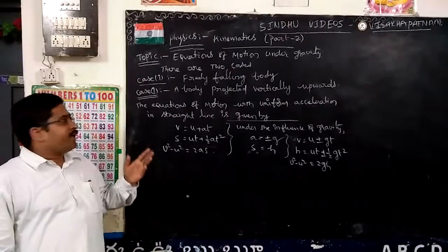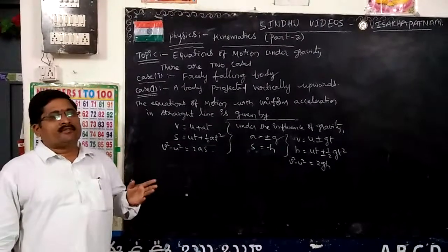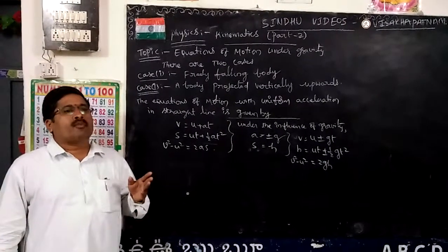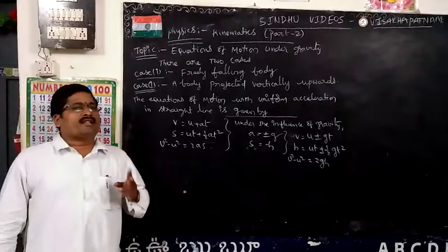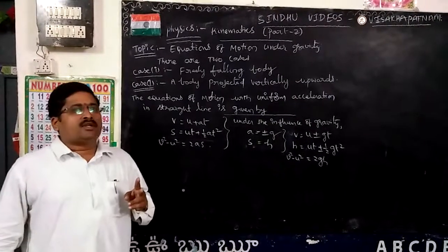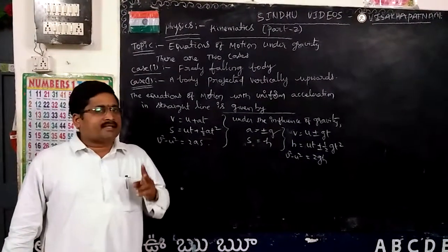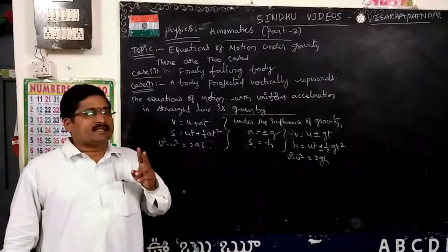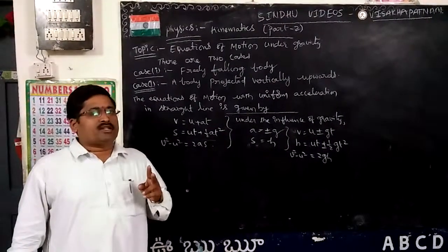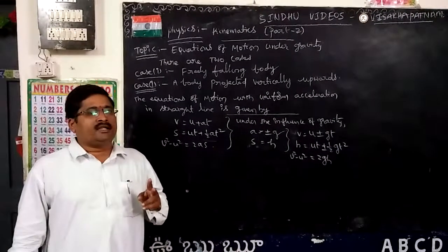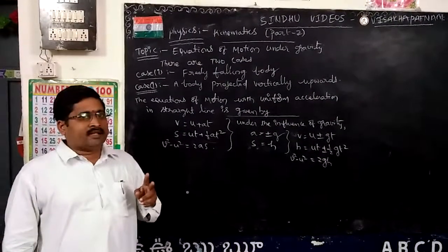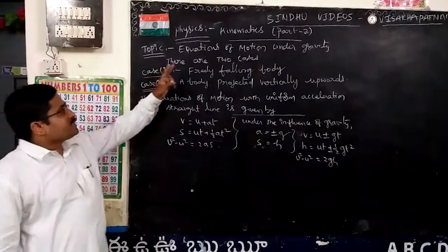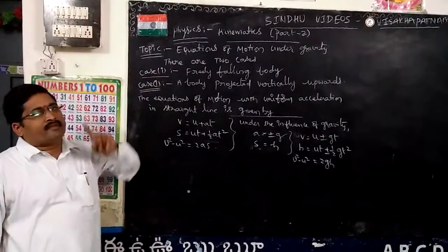What is kinematics? Kinematics is the branch of physics which deals with the motion of the body without reference to the cause of motion. What are the causes of motion? There are two causes of motion: mass and force. Without reference to the mass of the body and without reference to the force acting on it, we will discuss about the motion of the body. That is called kinematics.